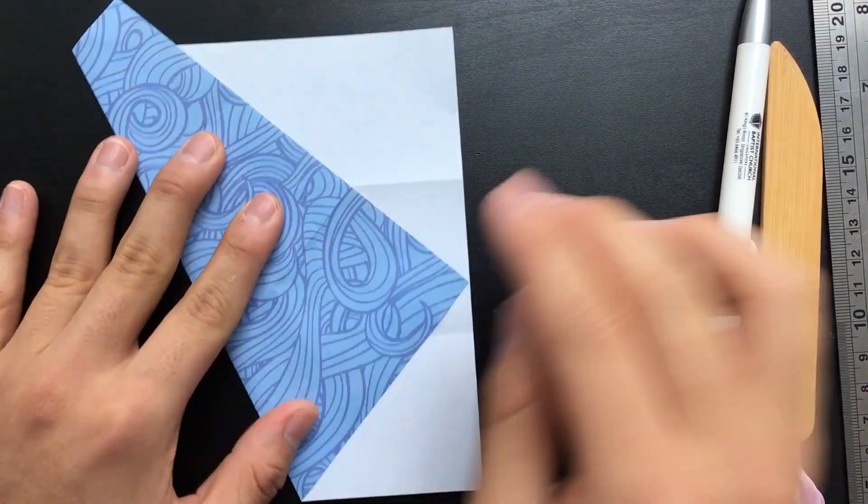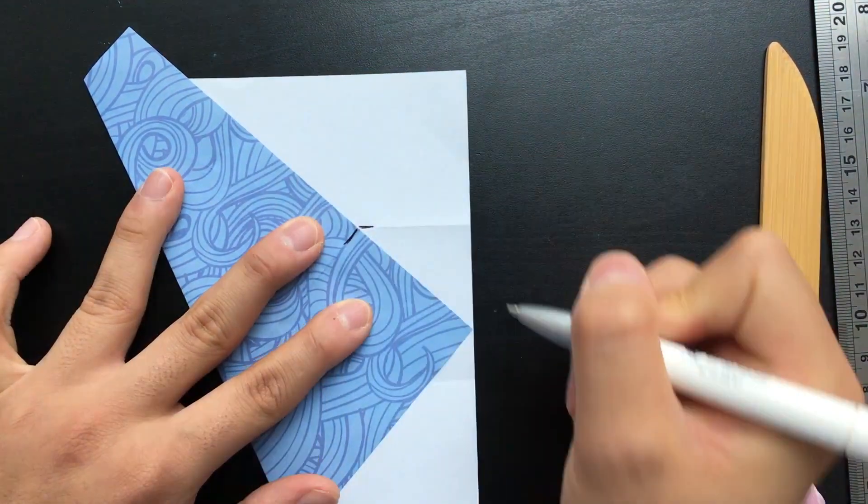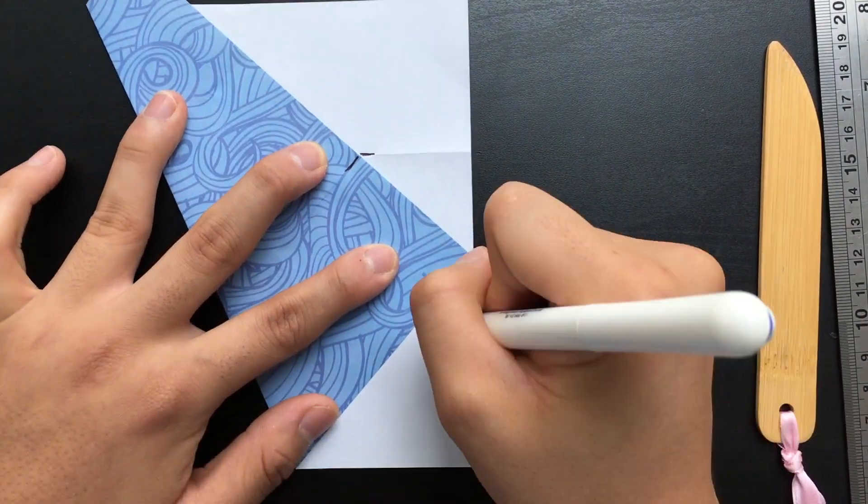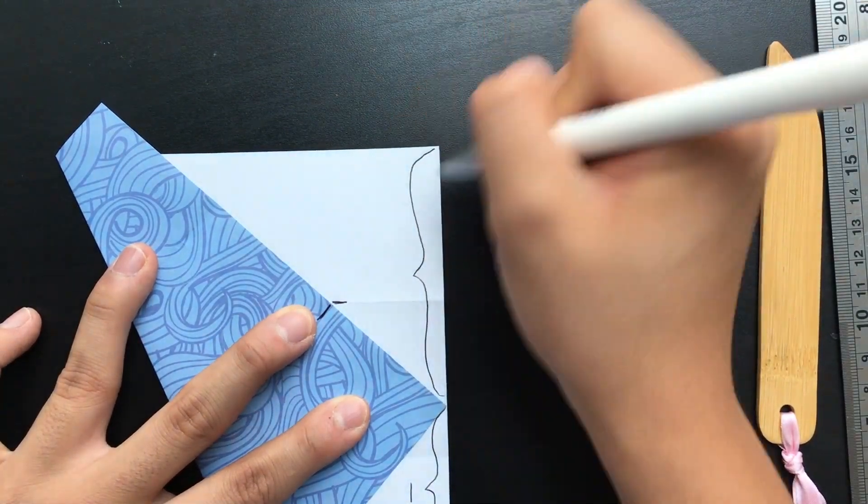So I've done that here and you can see that the bottom fold meets the top fold at an intersection point. Now if the bottom segment below the corner is one, then the top segment above the corner is the cube root of two.